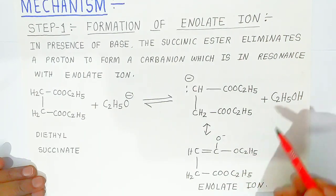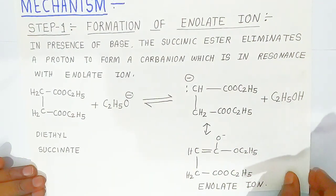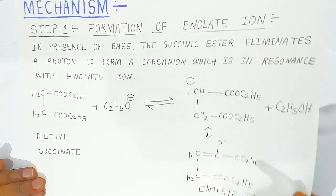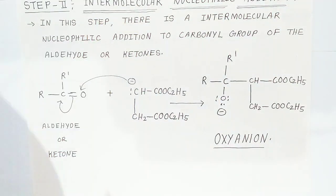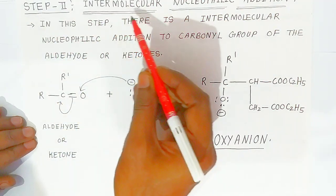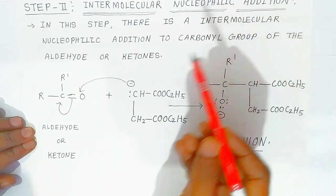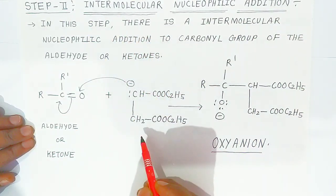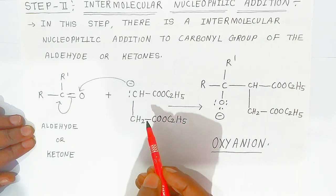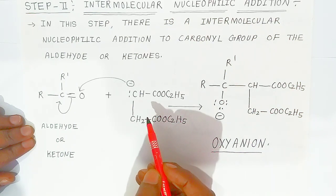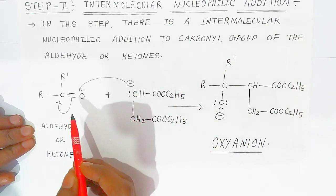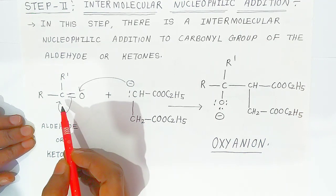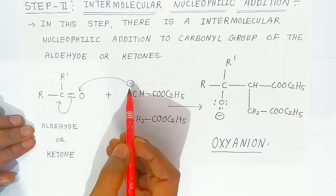Once the formation of the enolate ion takes place, in the second step there is an intermolecular nucleophilic addition reaction. This carbanion undergoes intermolecular nucleophilic addition to the carbonyl group of the aldehyde.